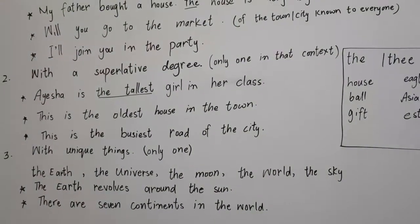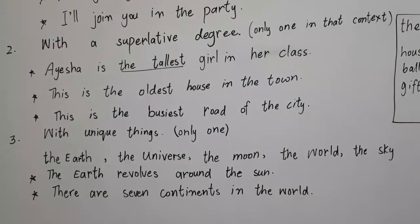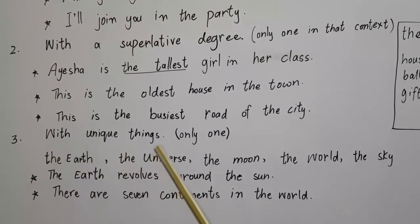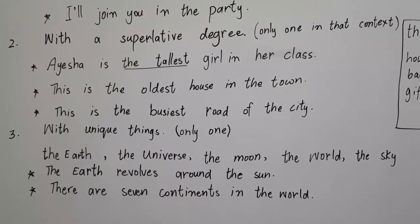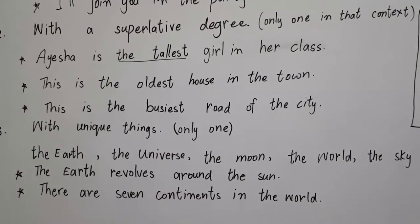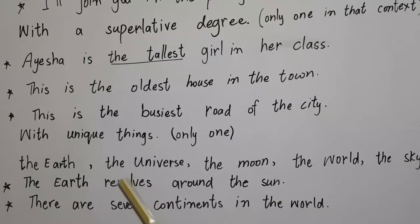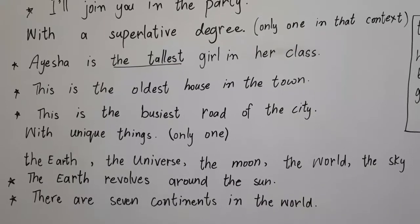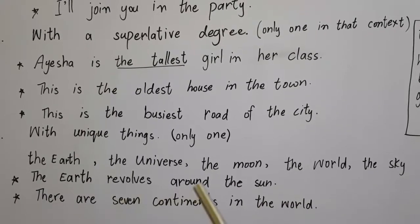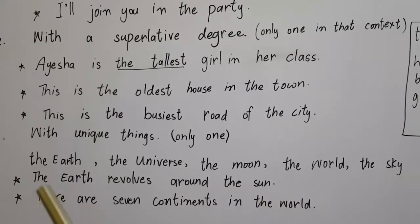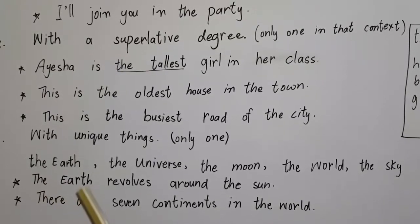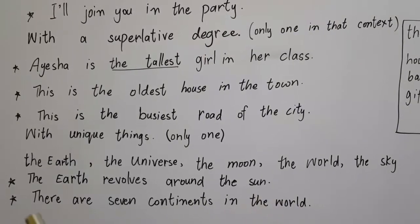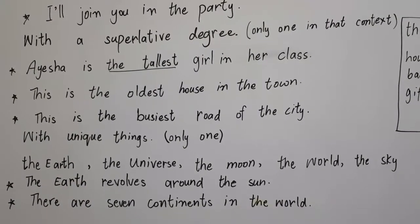Rule number 3: we use 'the' with unique things — things that are only one. For example: the Earth, the universe, the Moon, the world, the sky. 'The Earth revolves around the Sun.' The Earth is only one, the Sun is only one — these are unique. 'There are seven continents in the world.'